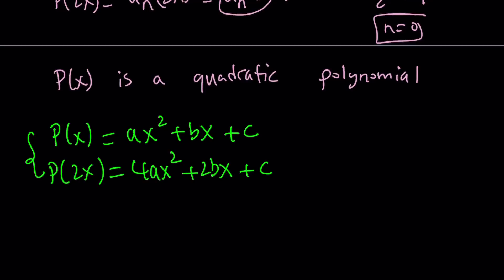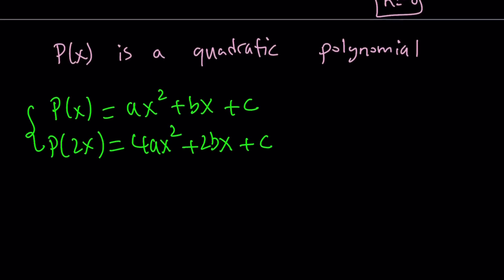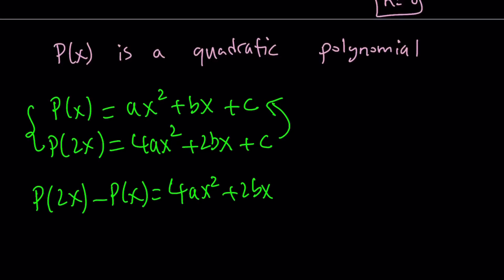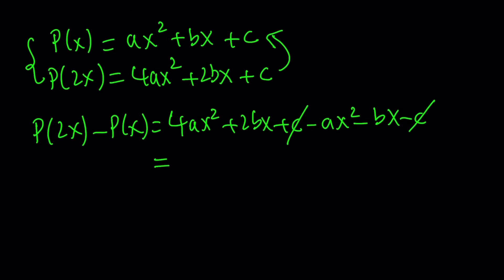Those are the polynomials that we have. And we're going to be looking at the difference. So, let's go ahead and subtract them. We're looking at P of 2x minus P of x, which can be written as 4ax squared plus 2bx plus C minus A x squared minus Bx minus C. Obviously, the C cancels out, which is good and bad, because then we're not going to get any idea about the C, but that's okay. And we know that this is equal to what?